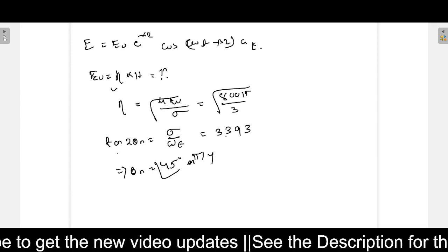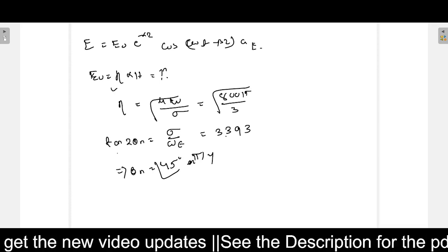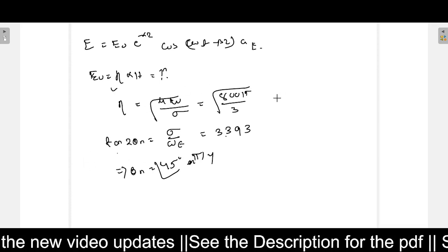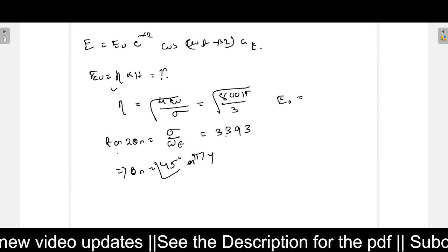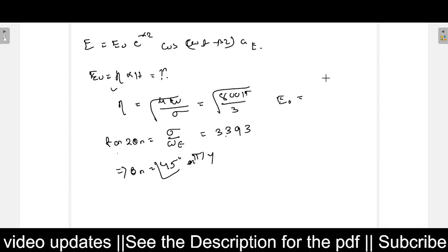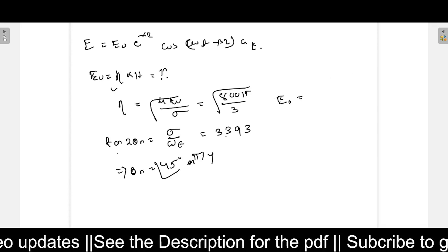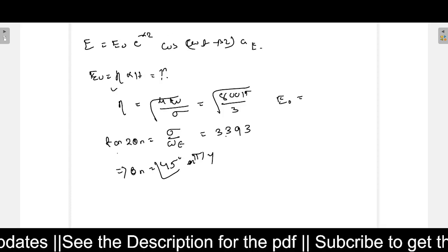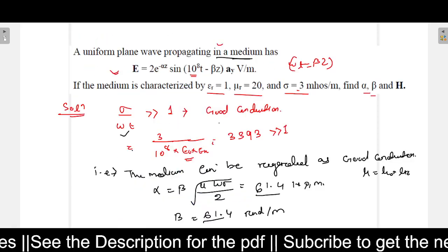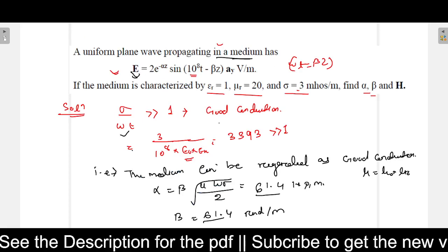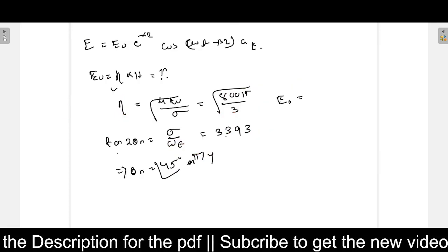So now we know what is the value of eta, and what is the H value we know. So what will be E_naught? E_naught equals... in question, E field is given, H field is asked to find.